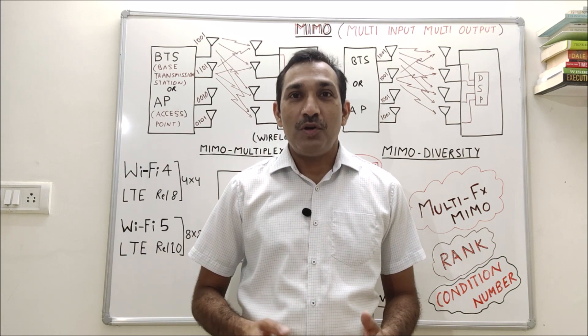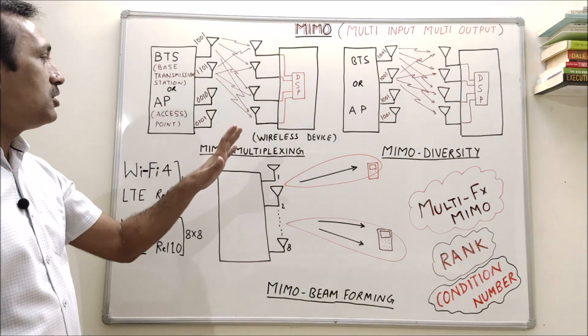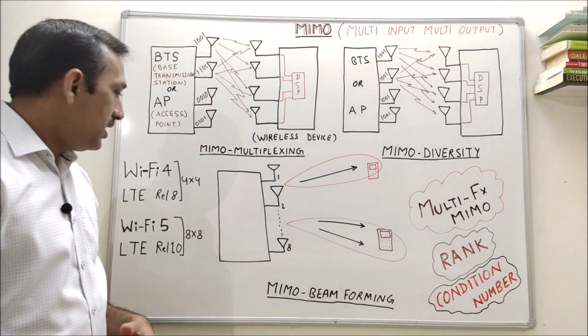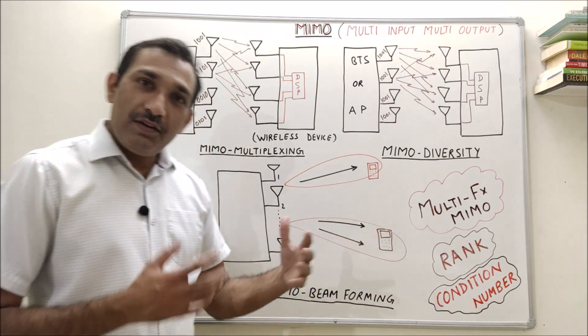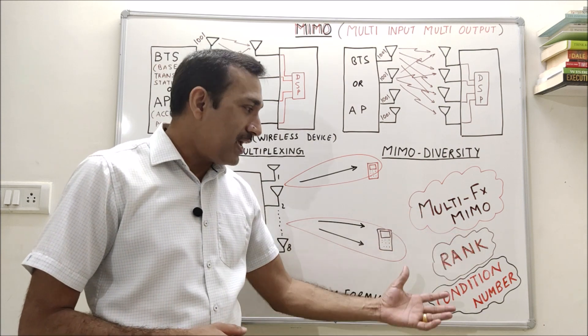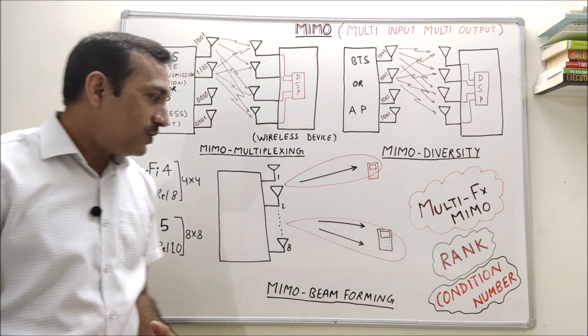MIMO is multi-input multi-output technology. Today we will discuss MIMO multiplexing, MIMO diversity, and MIMO beamforming. Then we will talk about multifunctional MIMO, MIMO rank, and condition number. So let's start.